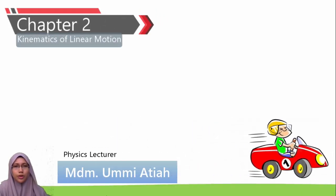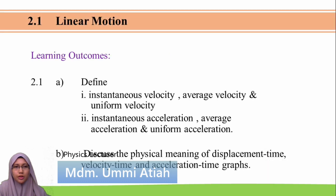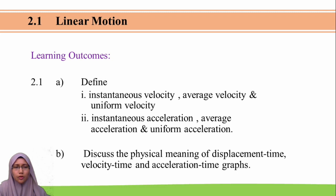Now we continue with Chapter 2, Kinematics of Linear Motion. In subtopic 2.1, Linear Motion, we have two learning outcomes to cover. The first is to define types of velocity and acceleration. The second is to discuss the physical meaning of the displacement-time graph, velocity-time graph, and acceleration-time graph.